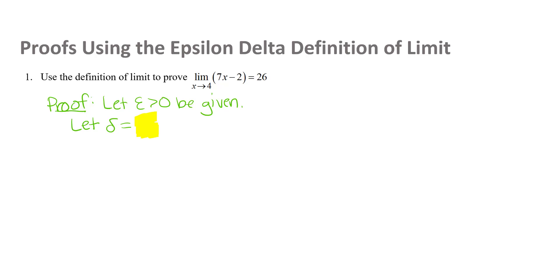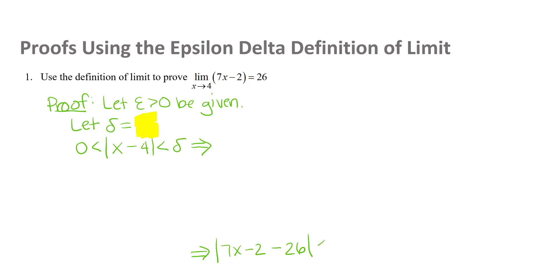It's important to make sure that the order is correct. The definition says that zero less than |x − a| less than delta — where our a is 4 — should imply that |f(x) − L| is less than epsilon. So we need to follow the direction of that implication: start with the delta inequality and show that it implies the epsilon statement we want.